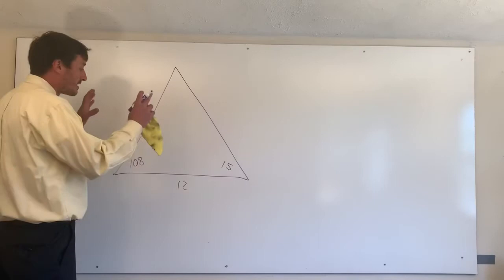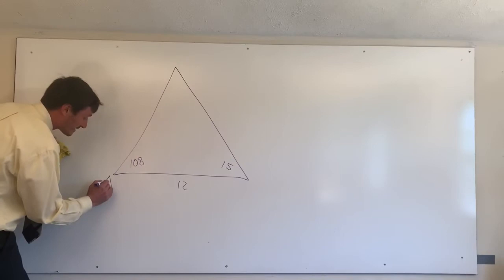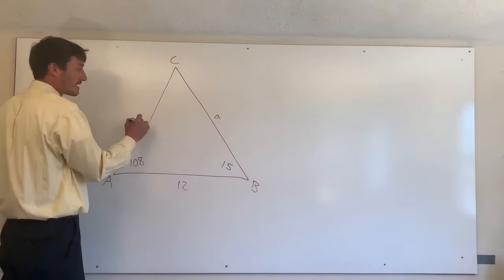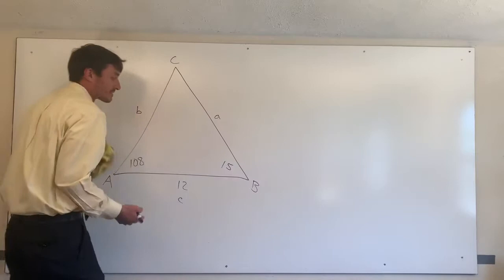So in this case, we're going to call this, again, it doesn't matter. Let's call this A, B, and C. Let's call this side length a, opposite of A, side length b, opposite of B, and we're going to call this side length c, opposite of angle C.